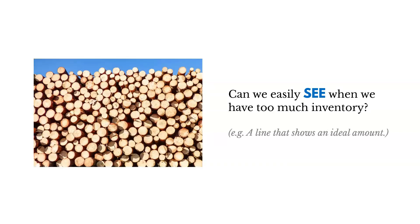Here's another example. Can we easily see when we have too much inventory? Let's say we build log cabins and we're storing lumber. Maybe we have a line that shows us an ideal amount of inventory, and if we're above that line, we can easily tell that we have too much inventory.